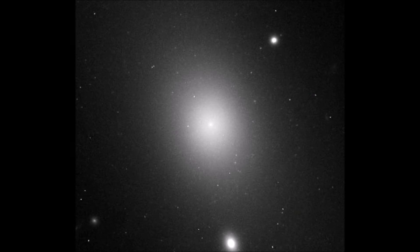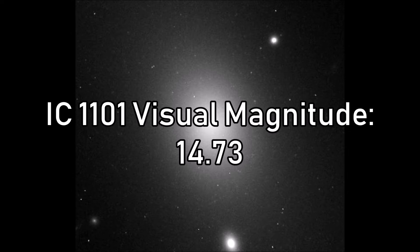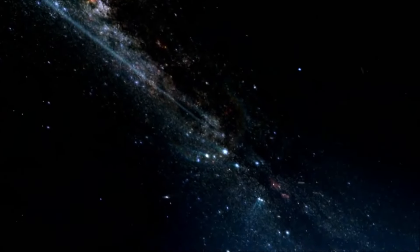It is located at the centre of the Abel 2029 galaxy cluster and is by far the brightest feature within the region, shining with an apparent visual magnitude of 14.73, particularly bright for such a distant galaxy.